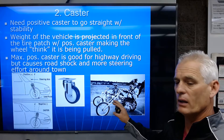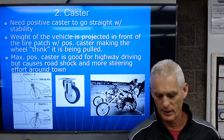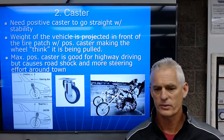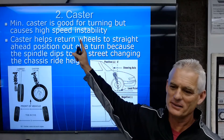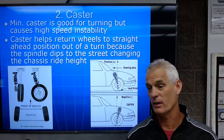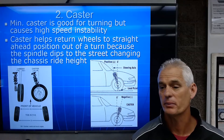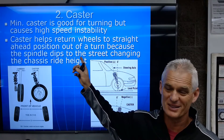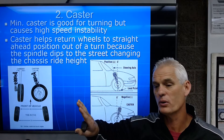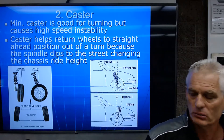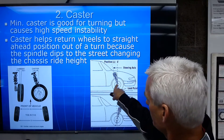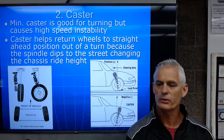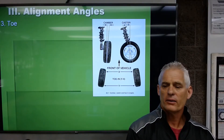Minimum caster is good for turning but causes high-speed instability. Positive caster helps return the wheels to straight-ahead position after a turn because the spindle dips toward the street during turning, deflecting the tire back to center. This is the third and final main alignment angle to introduce before discussing toe.